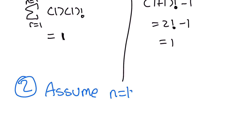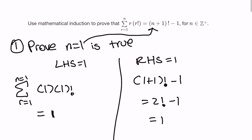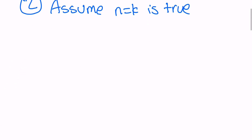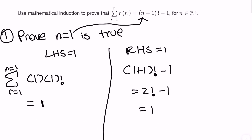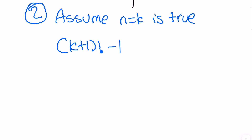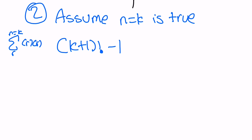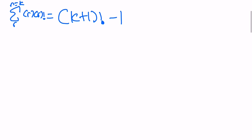Our next step is to assume n equals k is true. In this case, you plug k into your expression, which turns into k plus one factorial minus one. I'll rewrite our sigma function so it's easier to understand what n equals k actually means — that's r times r factorial — and we're just assuming that n equals k is true.